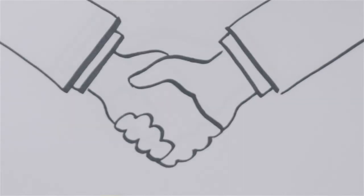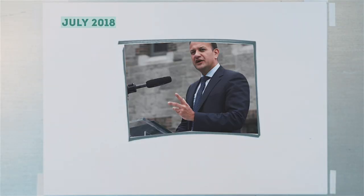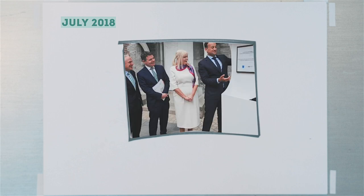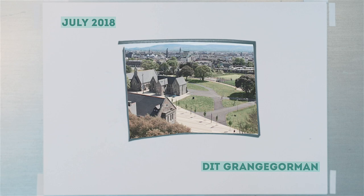From there, the Alliance formally applied for designation, and the application began. In July 2018, the Taoiseach, Leo Varadkar, announced the decision to approve the establishment of the Technological University Dublin during a visit to Grange Gorman.